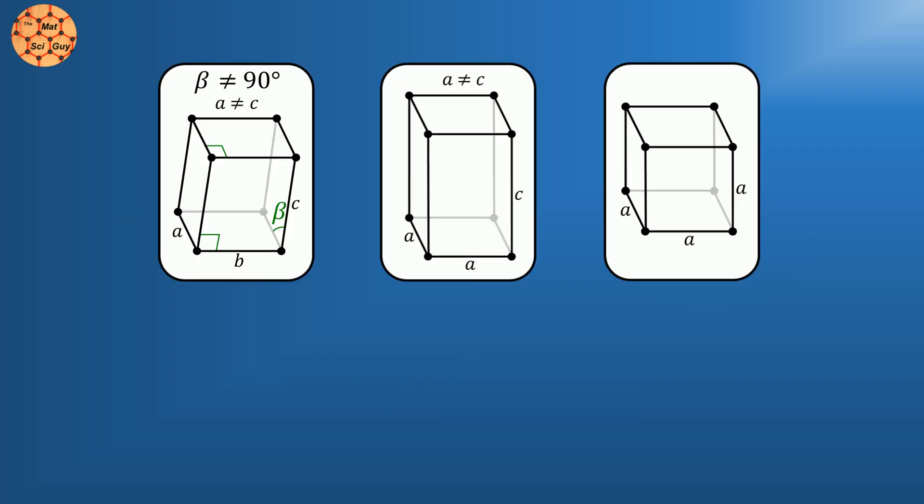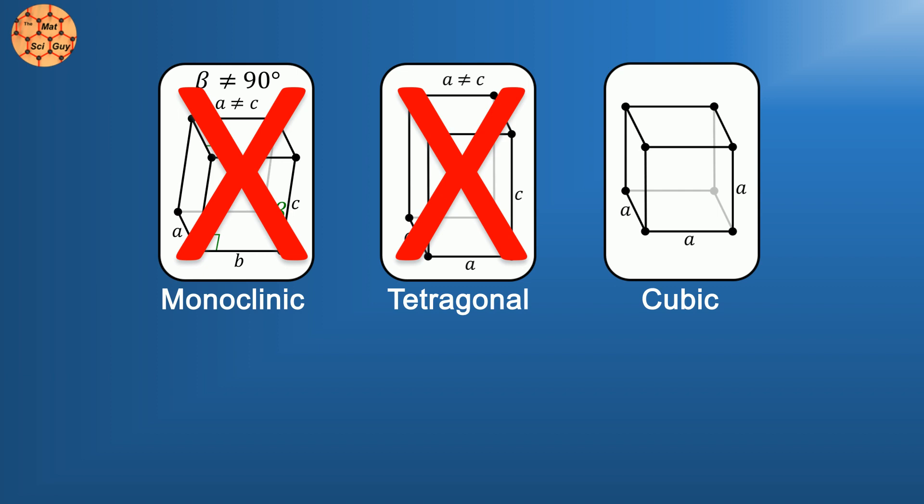Zirconia can be found in three polymorphs, meaning the shape of the atomic structure, but only the cubic form has optical properties like diamond. Part of the reason is that the cubic structure is highly optically isotropic, meaning the same in all directions. The tetragonal and monoclinic forms are less symmetric, and therefore lack the diamond-like uniformity and shine.